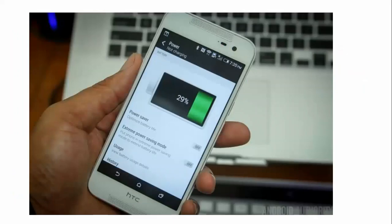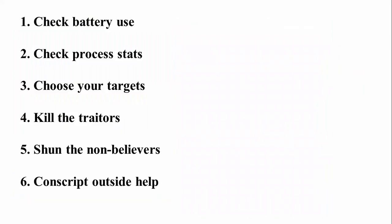Here are the six checkpoints about battery power. The first one is check battery usage, the second is check process statistics, the third is choose your target, the fourth is trickle the traitors, the fifth is charm the non-believers, and the sixth is conscript outside help. These are the six concepts I'm going to show you about stopping apps running in the background.